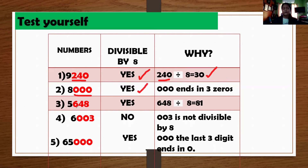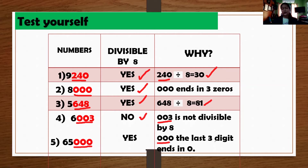How about number 3? 5,648. So if you divide 648 by 8, the answer is 81. So it is divisible by 8. Now how about number 4? It ends in 003, which is not divisible by 8. How about number 5? We have 65,000. So it ends in 3 zeros, so it is divisible by 8.